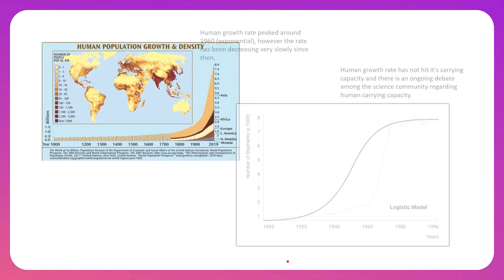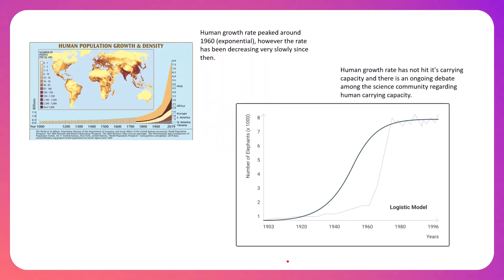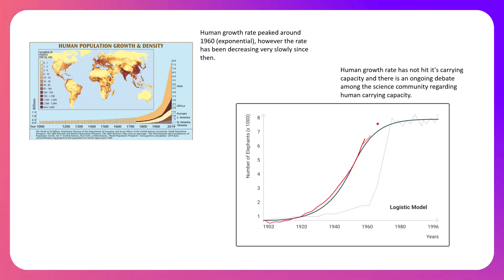If we graph the human population, we have seen a period of exponential growth — that J-shaped curve. What we're seeing now is that we're perhaps slowing down and reaching a carrying capacity. I say perhaps — why, Mr. Pfeiffer?